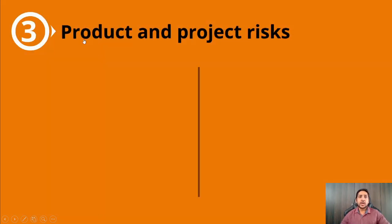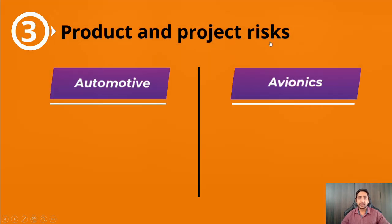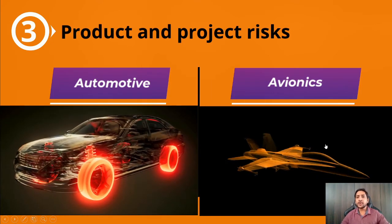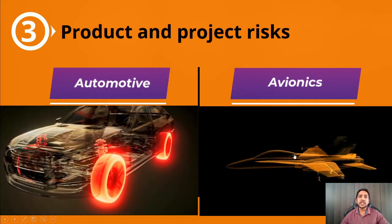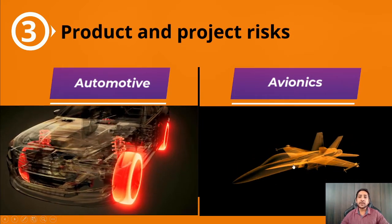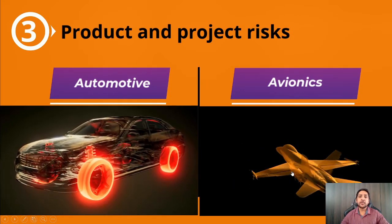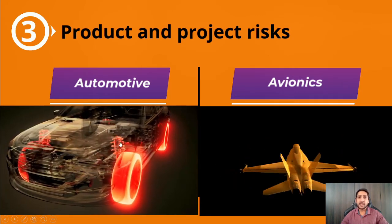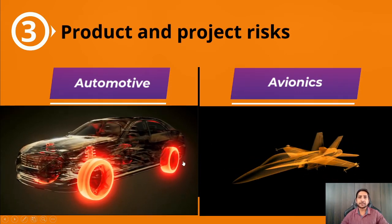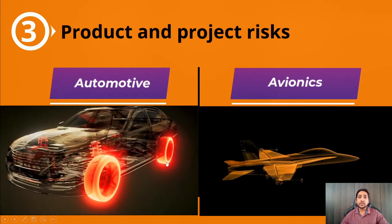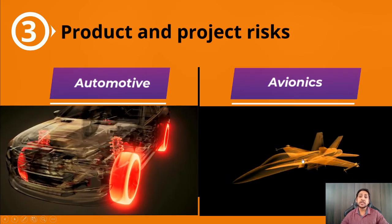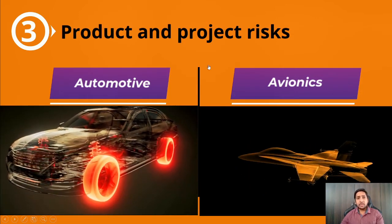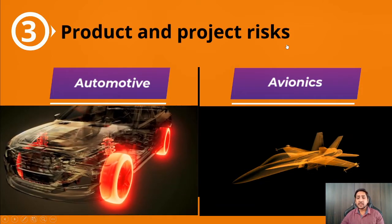The third context factor is product and project risk. If you are working for an avionic industry, the risk is very high — if something fails it could cost many lives. If something fails in a car, it is also a threat but the impact is comparatively less. Based on what product you are working on, you have to select the test process. For higher-risk products, testing will be more rigorous.